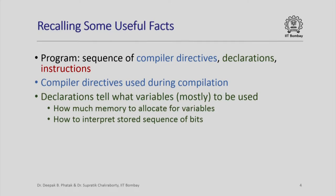Declarations tell the compiler what variables are to be used. A declaration tells how much memory to allocate for storing the value of a variable. For example, if a variable is declared as an integer then 4 bytes of memory are to be allocated for it. A declaration also tells how to interpret the bits stored in those memory locations — for example, whether it is a signed integer, an unsigned integer, or a floating point number.